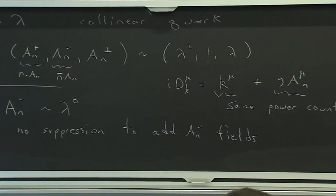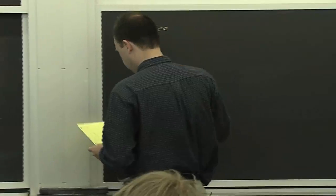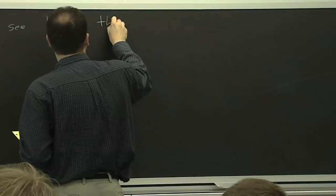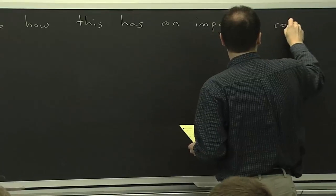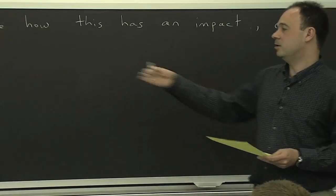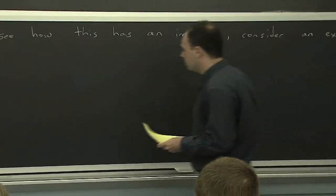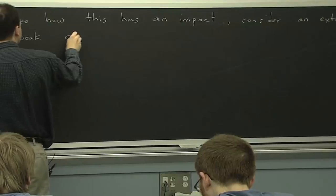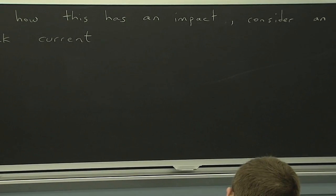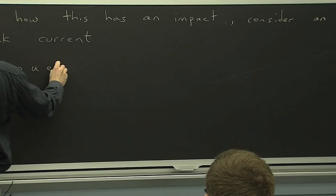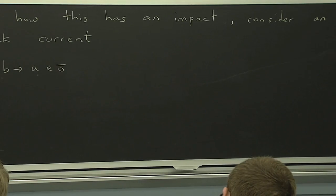So let's do that and see what happens. A priori, you might think that this is really bad, because you could have an infinite number of different operators at lowest order, just with a different number of these A^n_minus fields. But we'll see that things are not so bad. I think it's best to do that by way of example.